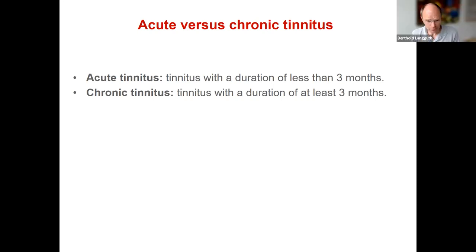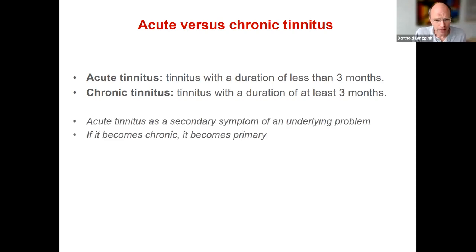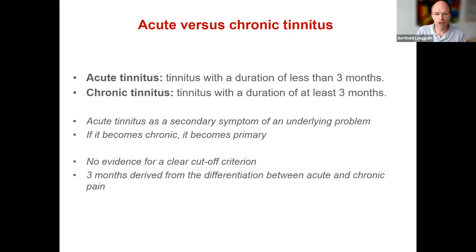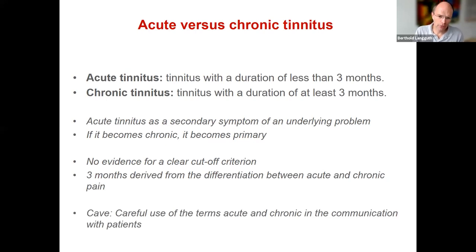There is a differentiation between acute and chronic tinnitus: acute duration of less than three months, chronic more than three months. This is important because acute tinnitus can be a symptom of an underlying problem, whereas chronic tinnitus is typically the primary problem. We have no empirical evidence for a clear cut-off criterion between acute and chronic tinnitus, and we decided to use three months as a cut-off following the differentiation used in pain. We should be careful using these terms with patients, since they may be scared that their acute tinnitus will turn chronic, and there is no real evidence it makes a difference whether someone has two, three, or four months of tinnitus — this is more for research and classification purposes.